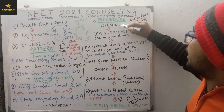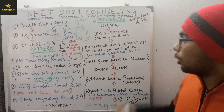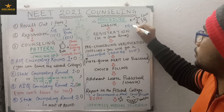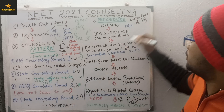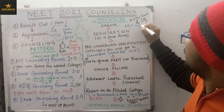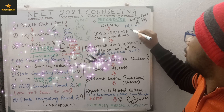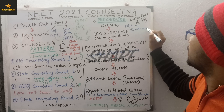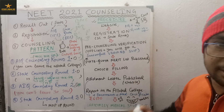Now let's come to the procedure. First, you need to go to the website. For All India Quota, it is mcc.nic.in. For State Quota, for West Bengal students it is wbmcc, and for UP it is upmcc.